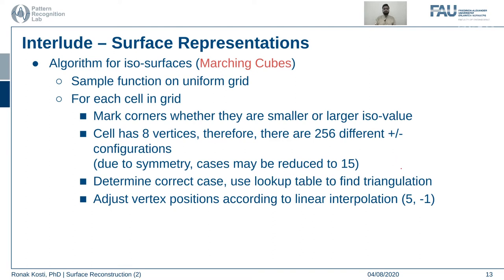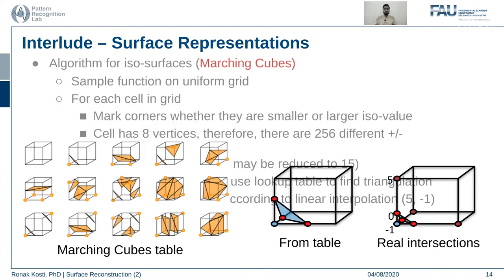All we have to do is use a particular combination and a lookup table to find the triangulation and adjust vertex positions according to linear interpolation. The marching cubes table provides this set of interpolations for every cell in the grid — depending on which points are higher or lower relative to the implicit function, we look up the appropriate surface configuration and fit a plane across those intersections to extract the exact iso surface.